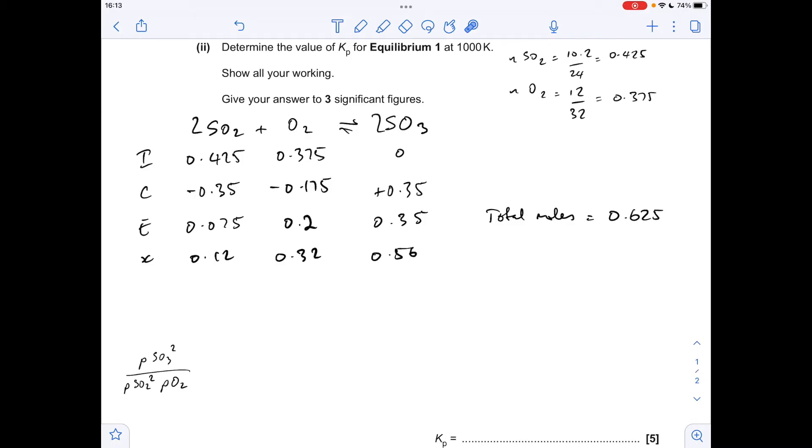Now we can work out the partial pressures of each chemical. We multiply the mole fraction by the total pressure, which was 2.5 atm, which gives us those numbers there. Now all we need to do is put them into the Kp expression, which to three significant figures comes out at 27.2, and remember the units were atm to the minus 1.